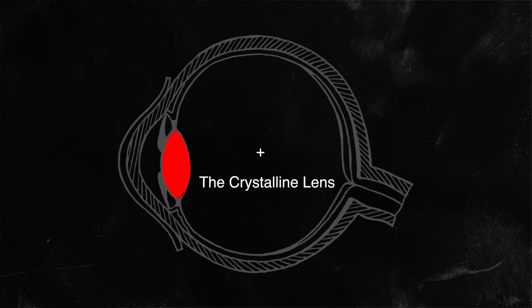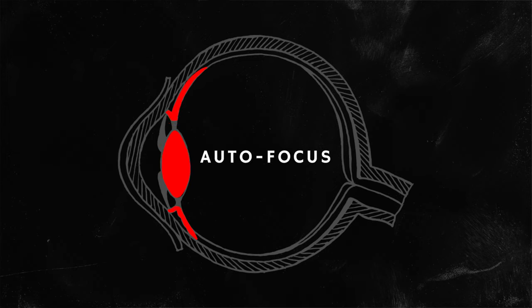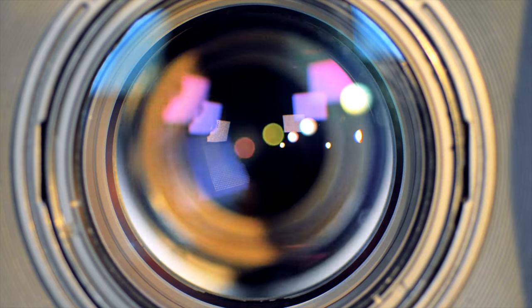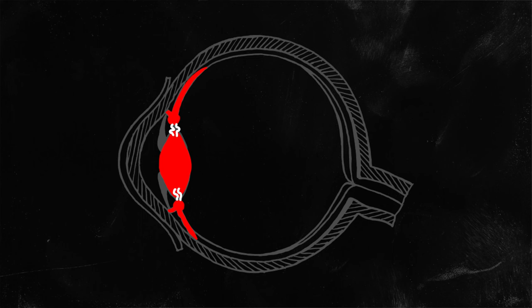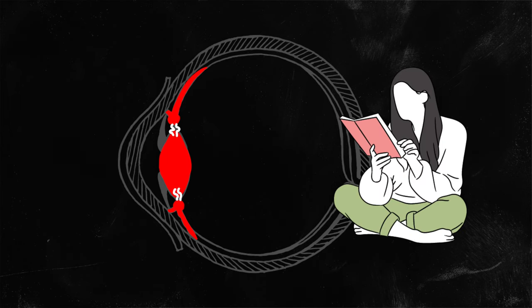The ciliary body and the crystalline lens work hand in hand, and this is why I coupled them. Think of these two as our autofocus system. But instead of shifting the lens position as a typical camera lens would, our eyes have the ability to change the shape of the lens itself as it wishes.